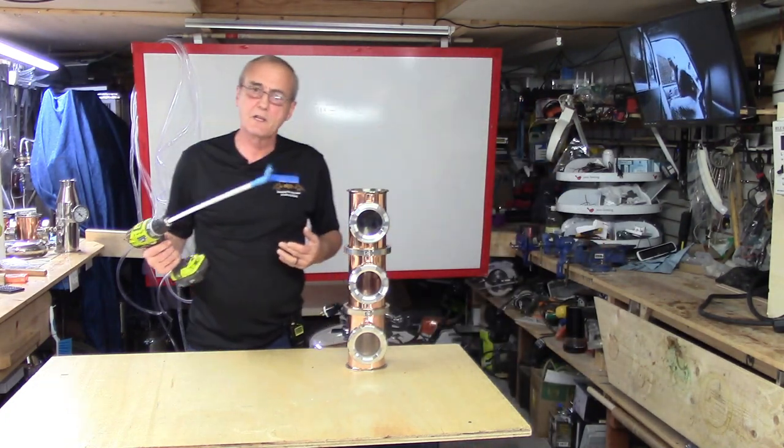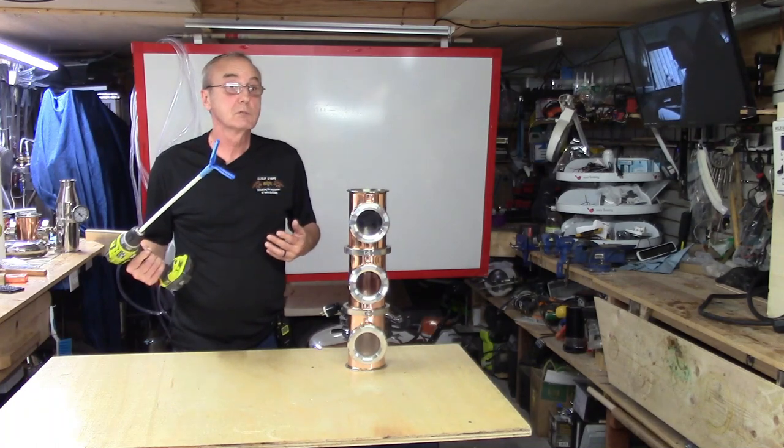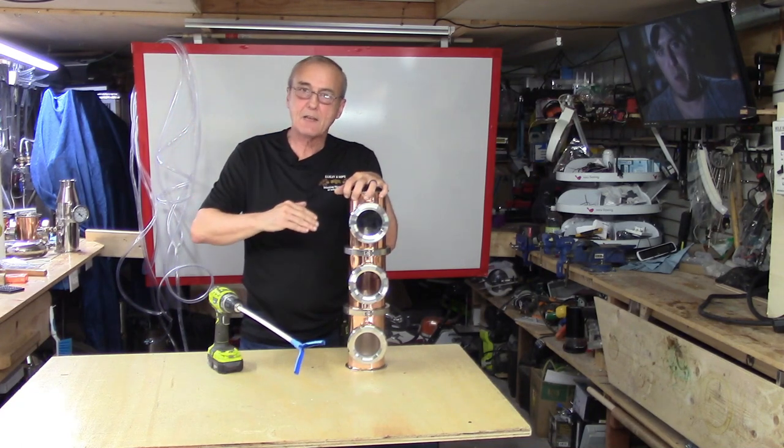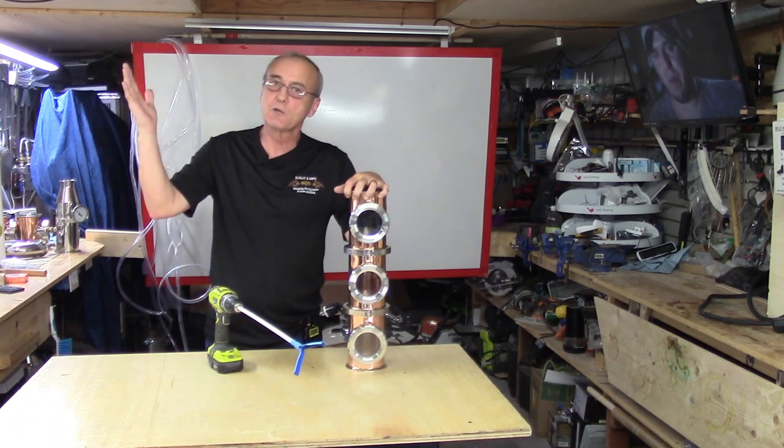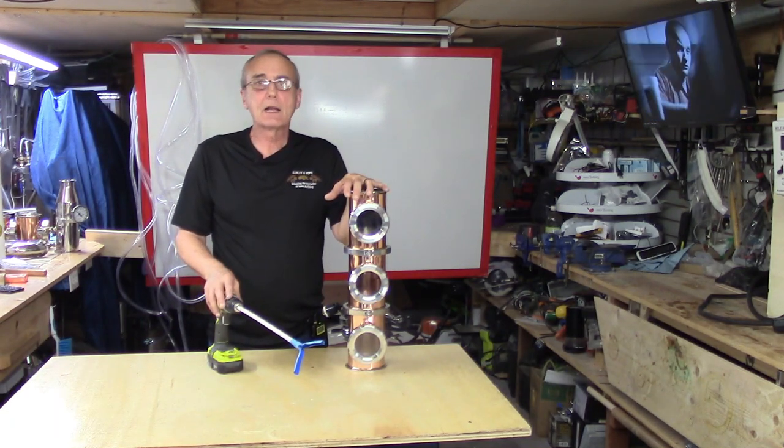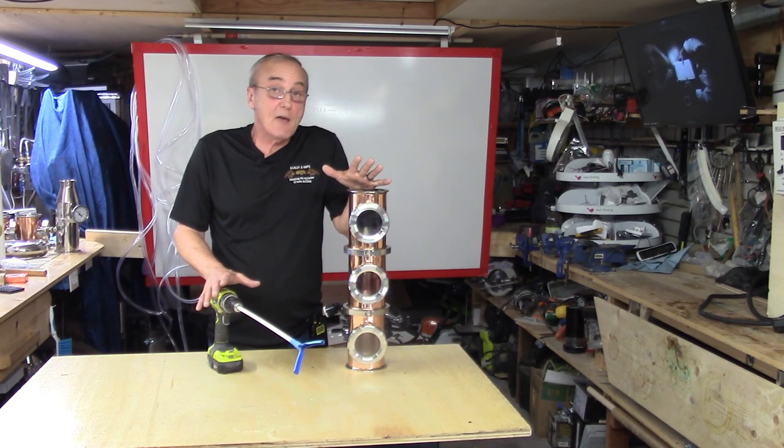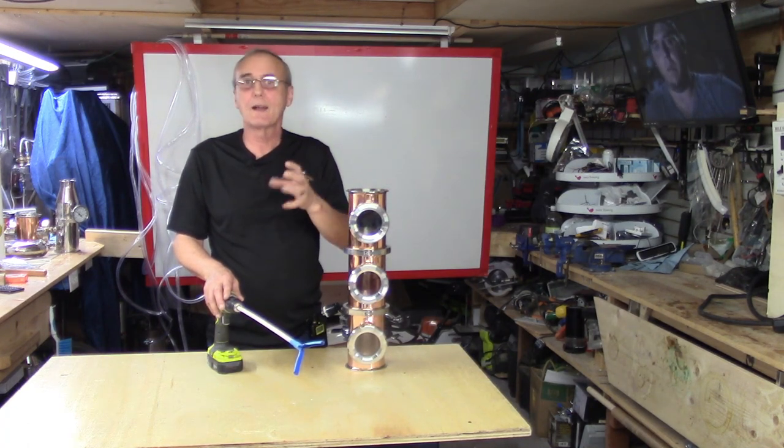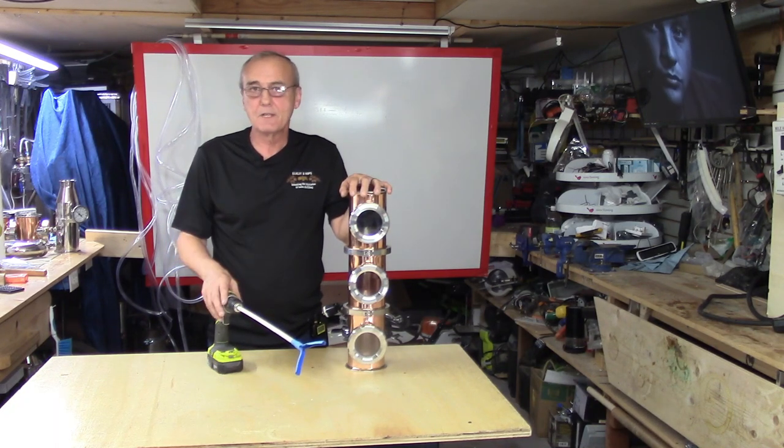You might have seen this sitting in the background in the last video. For those of you experienced, you already know. After fermentation, the first thing you want to do is try to degas. Degassing is nothing more than just trying to get the CO2 out of your mash. The reason you want to get the CO2 out is because if you use any kind of chemicals or clarification agents, or if you just want to wait and use gravity and allow that to settle, it doesn't settle as quickly or as effectively if you've got a lot of CO2 residing inside that mash.